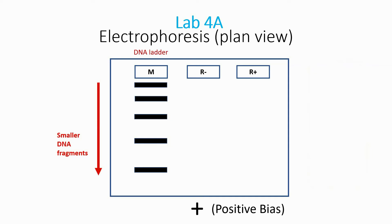You're asked to deposit the control reagents — the sample without the restriction enzymes — in the R- well, and the digested plasmids in R+. With digested plasmids in R+ and intact plasmids expected in R-, students should be able to predict, at least in concept, what the resulting bands should look like in the gel.